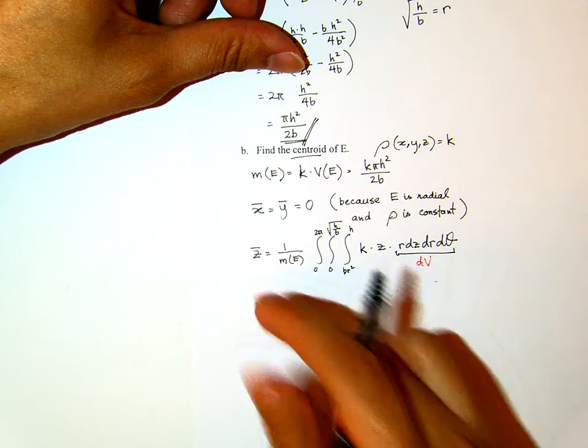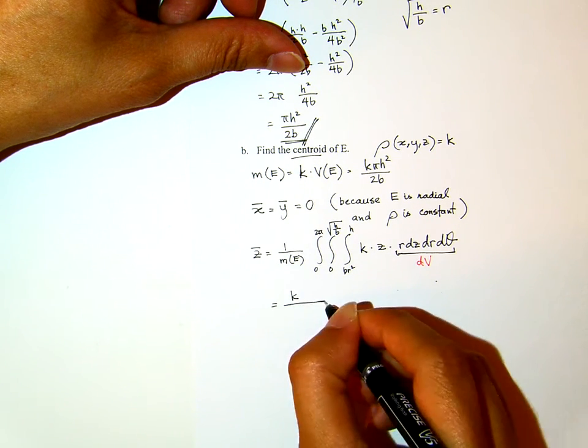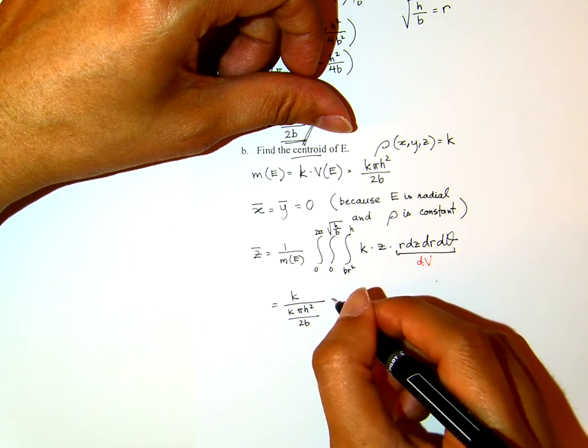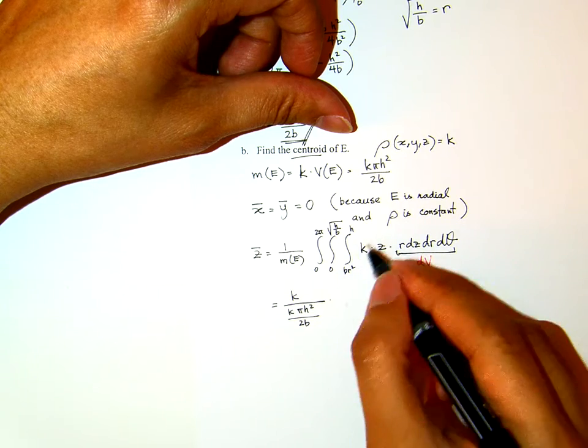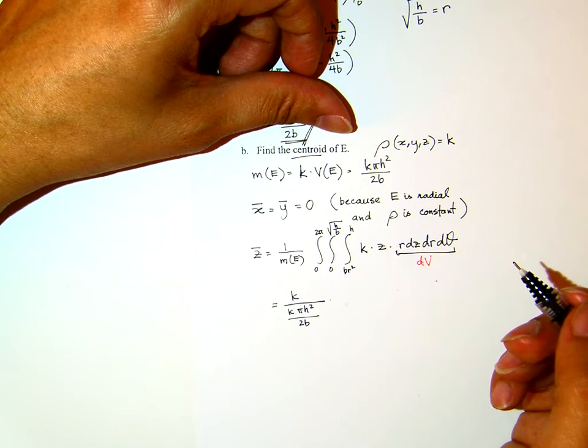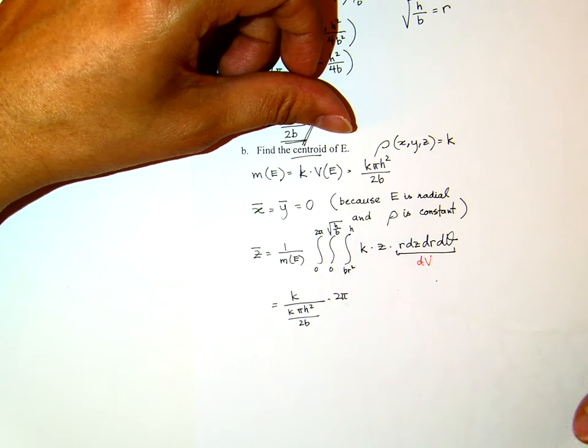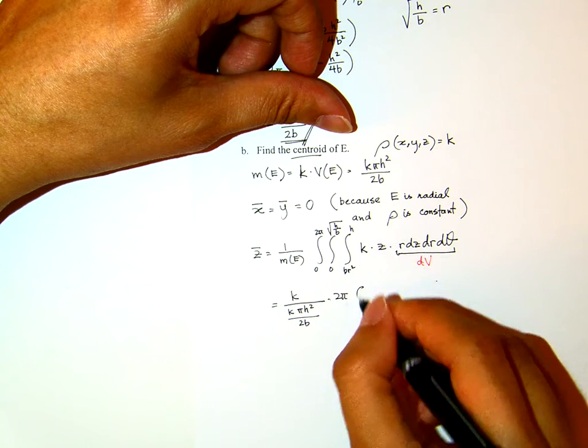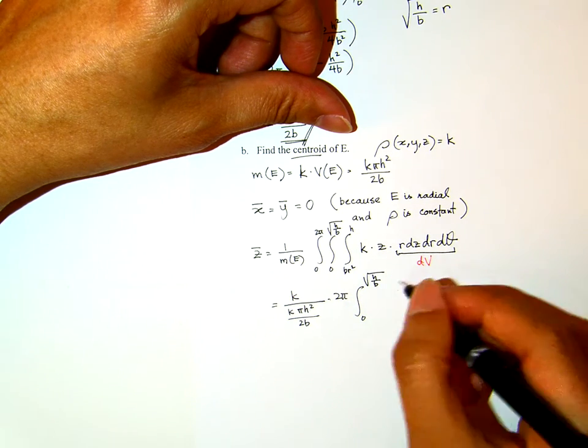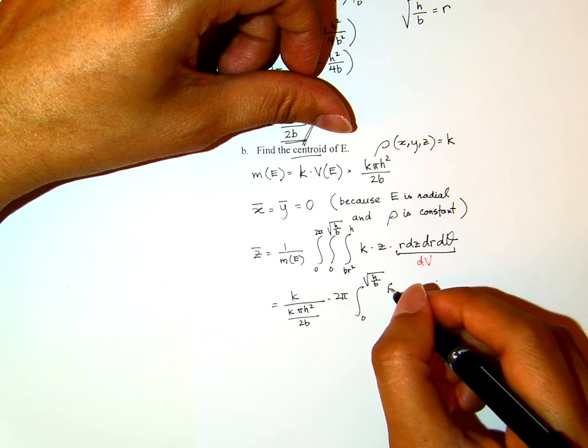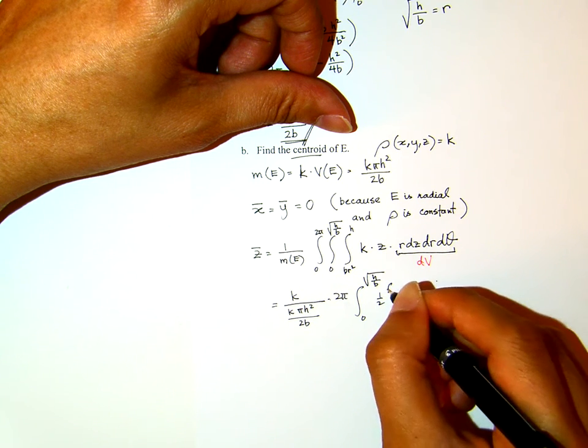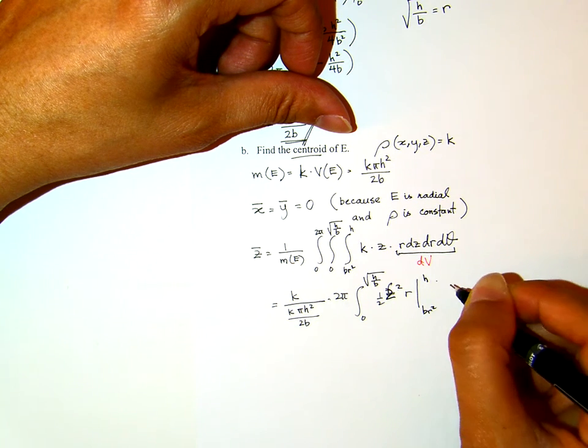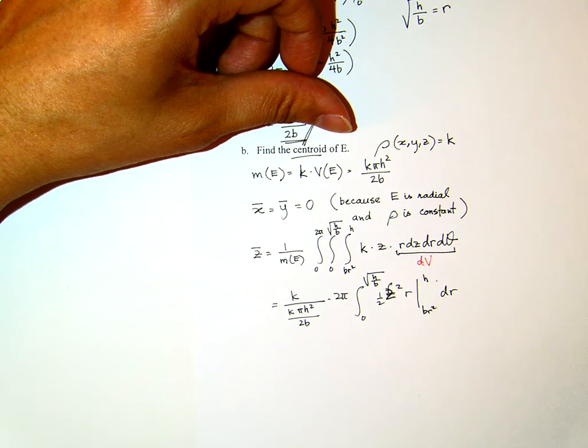Now, because the density is constant, I can pull it out. It's k over, the mass will be k π H squared over 2B. And because the integral, the inner integral is free from theta, I can pull the 2π. And then, I will integrate with respect to z. That will be integral from 0 to square root of H over B, and that will be z, 1 over 2, z squared with r from Br squared to H, then dr.